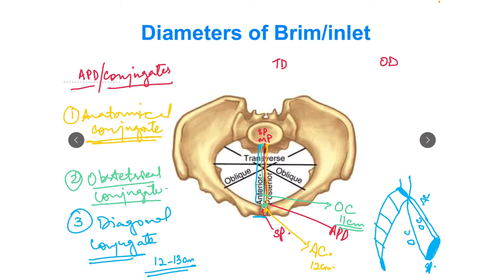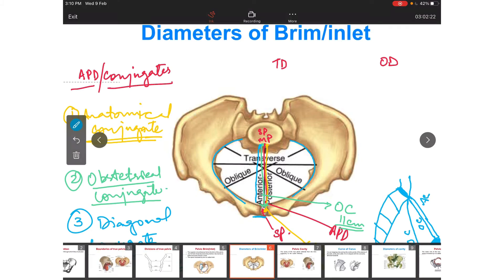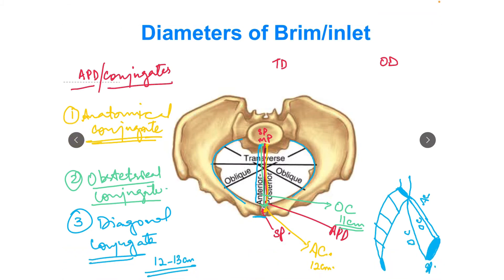Transverse diameter जो होता है, यह होता है a line between the furthest points on the iliopectineal line। इन furthest points के बीच जो diameter आता है उसको हम बोलते हैं transverse diameter, और यह होता है around 13.5 cm.